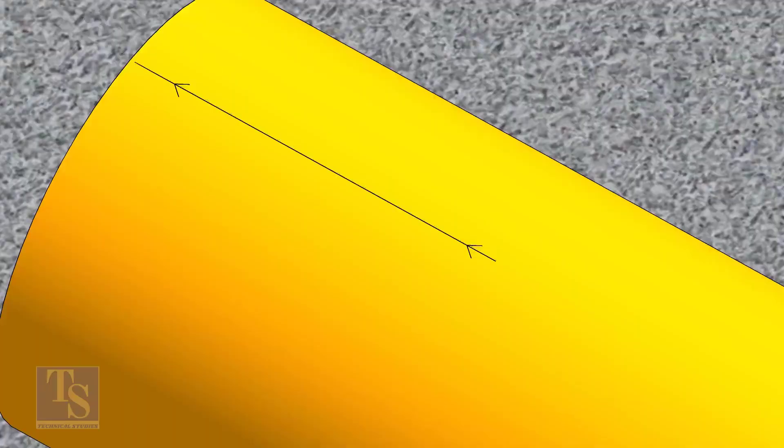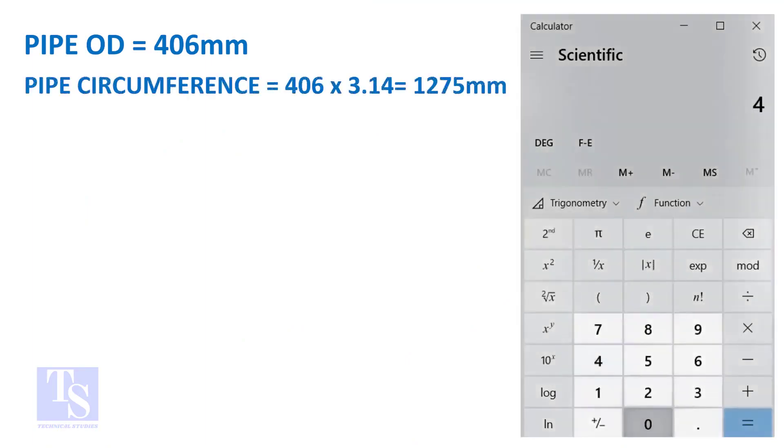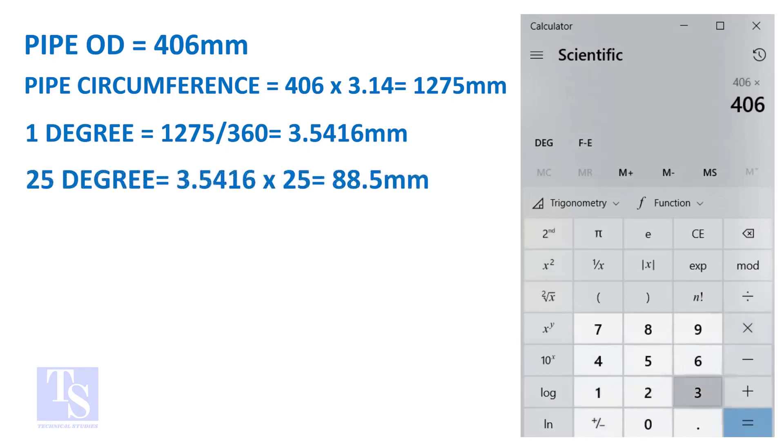Let us calculate the circumferential distance or arc length for 25 degrees. Multiply the OD by 3.14, you will get the circumference of the pipe. Divide the circumference by 360, you will get the arc length of 1 degree. And finally, multiply the 1 degree arc length by 25. Now you have the arc length of 25 degrees. You can apply this formula to get the arc length of any degree.